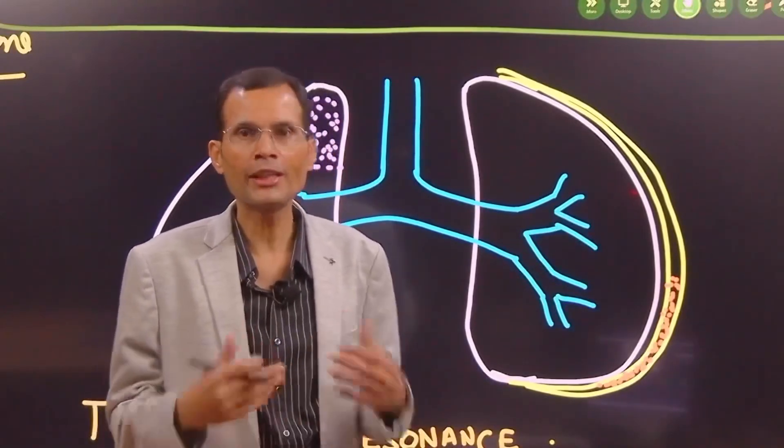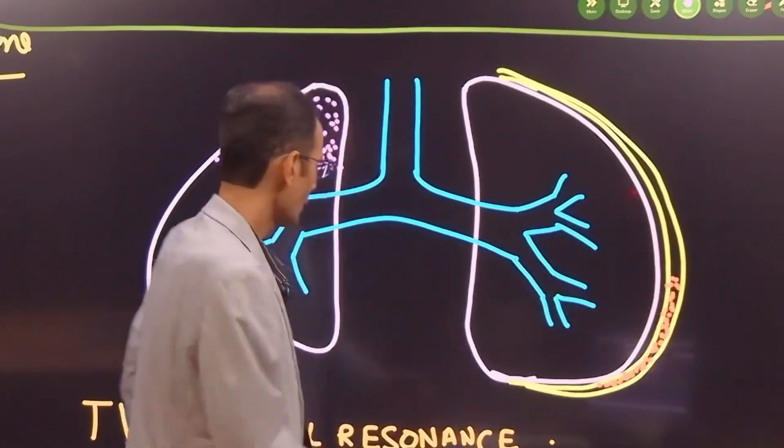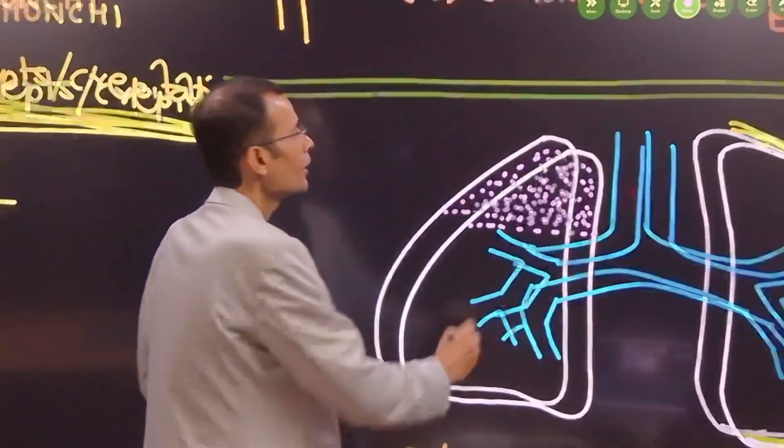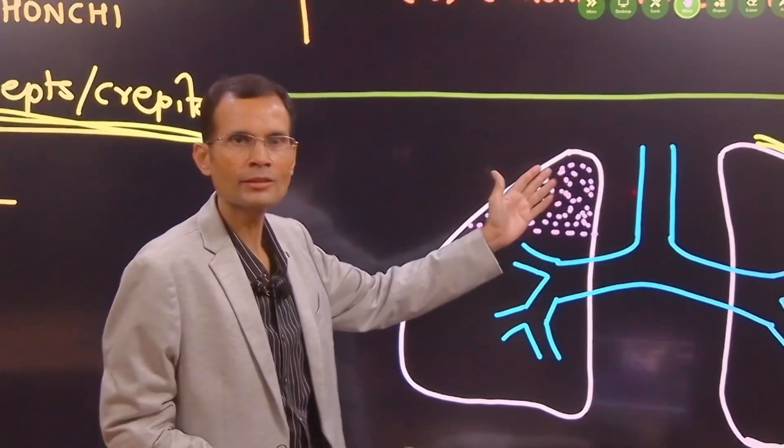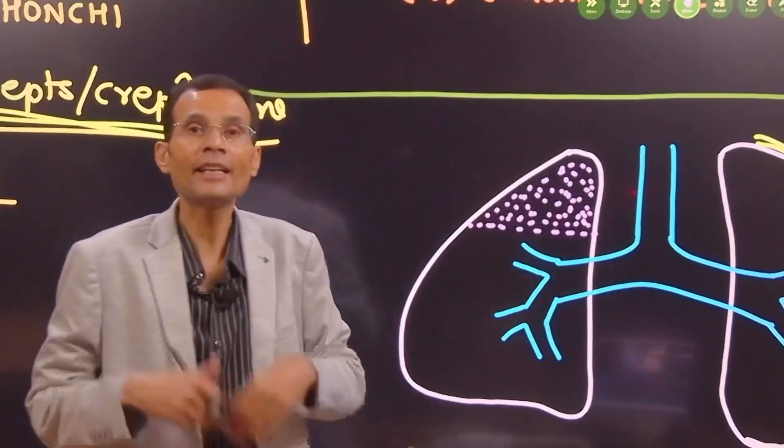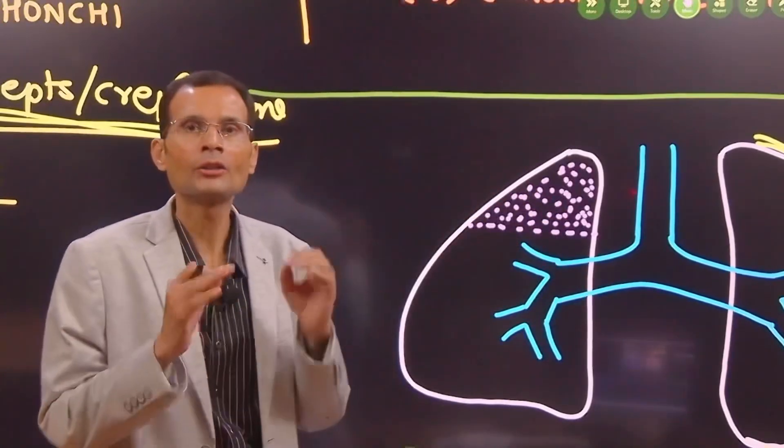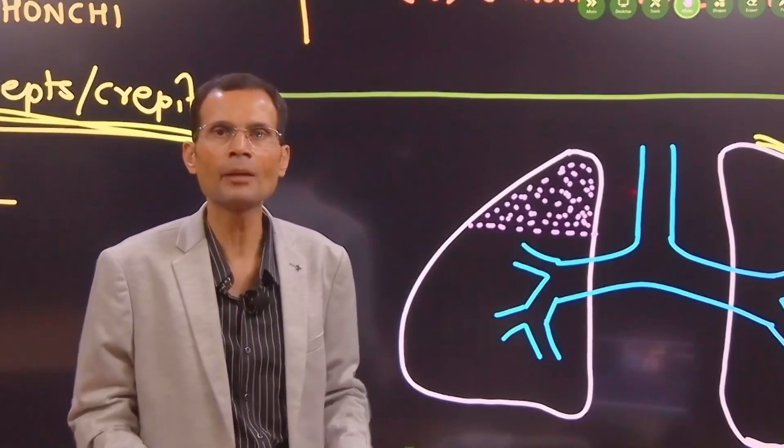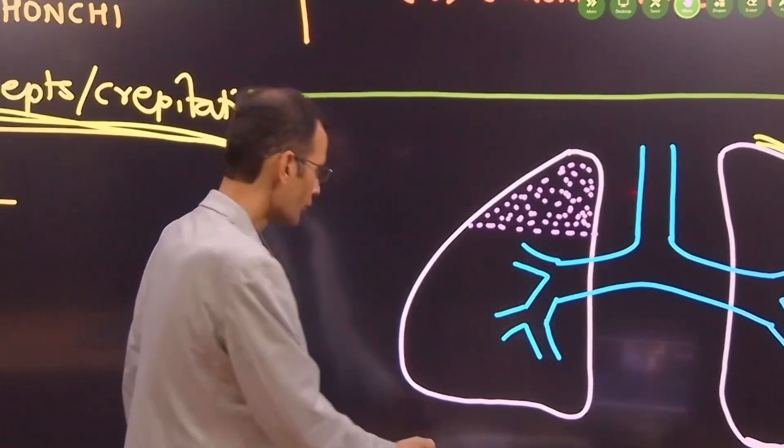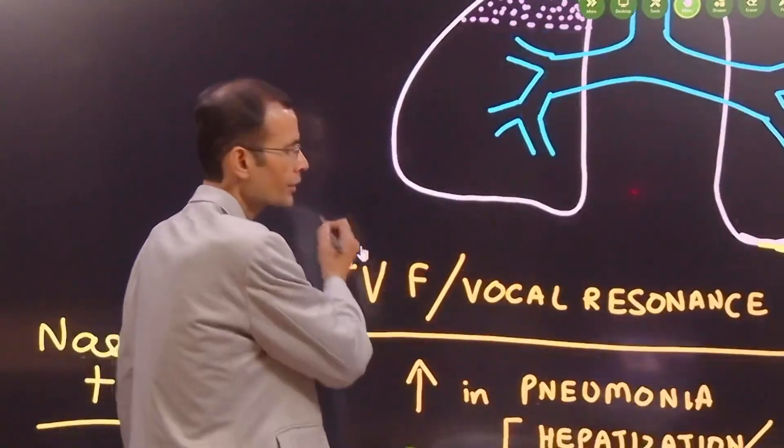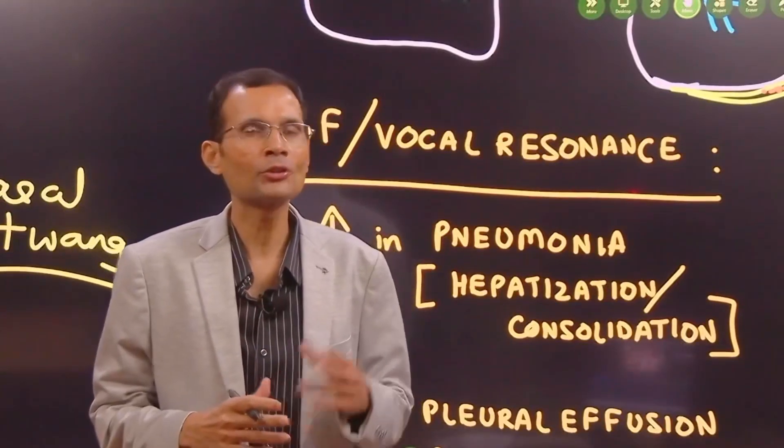And therefore we can rule out pleural effusion or pneumothorax on the other side, that is left side. Right-sided lobar pneumonia where you get a higher vocal resonance compared to the other side - it is increased vocal resonance because of the solidification of the lung parenchyma. Solids being good conducting medium for those sounds or for those vibrations. And therefore this was the case which you had to deal with, and it was solely dependent on two findings: vocal resonance and the crepitations.